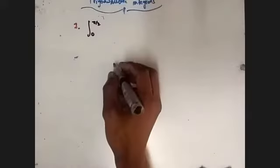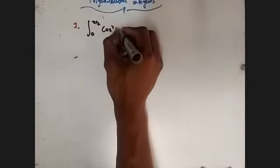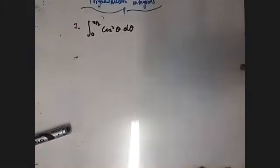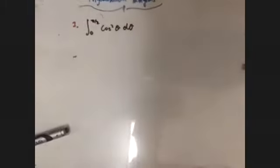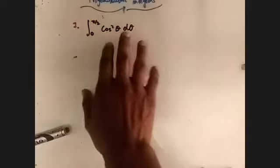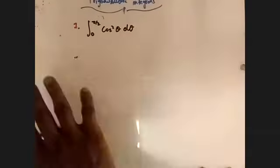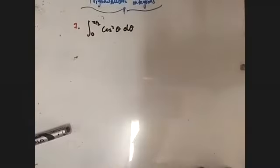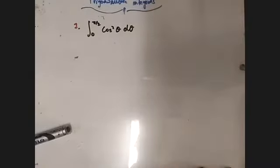It's the integral from 0 to π/2 of cos²η dη. This is the only thing that you are given, and they say to evaluate cos²η dη. Nothing else. What did I say to you? When I'm given something of this nature, you must always consider half-angle identities. Half angles are very important.